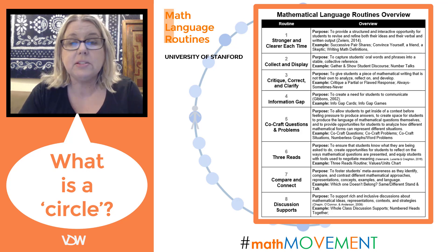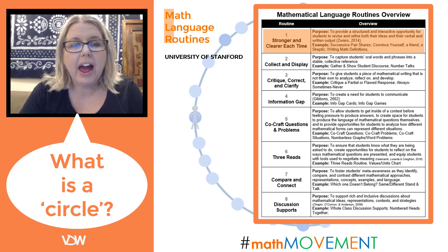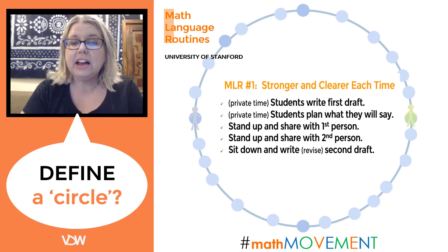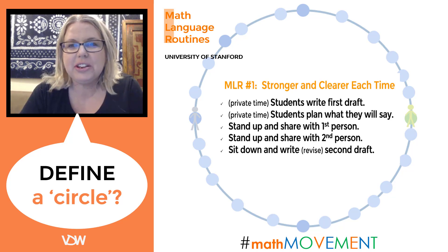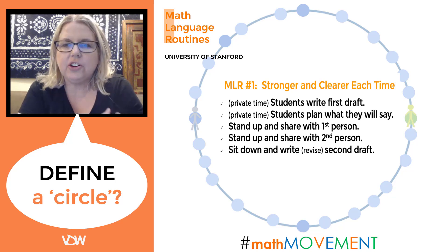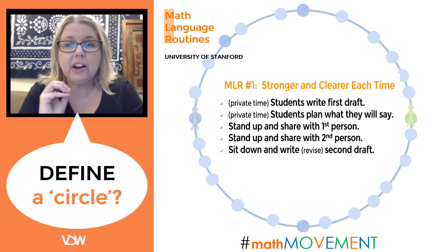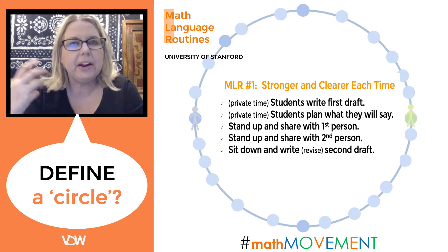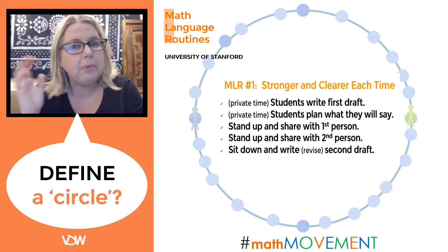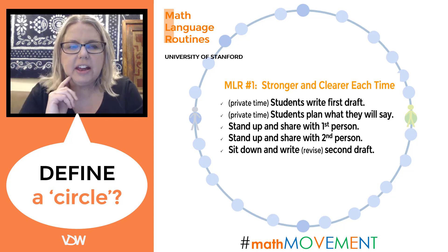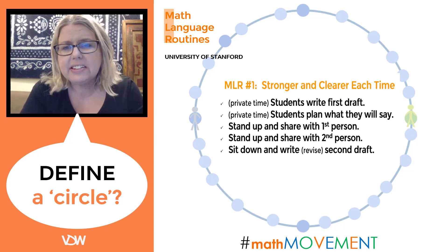One of my favorites of the eight routines is the first one: 'Stronger and Clearer Each Time.' After we've had the discussion standing in the circle, I have all students take their seats and engage in this routine. I love it because it also includes more movement. I have students write their first draft defining a circle based on what we talked about. I demand the class is silent, all students put pens to paper — they can draw pictures but I also want words. I give them somewhere between 60 seconds to three minutes to write their best first-draft definition.